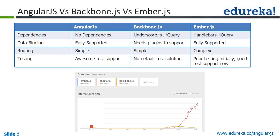The next one is testing. Whenever a developer builds an application, they should be able to write unit test cases. In AngularJS, we have awesome test support — using Protractor with Selenium, we can write end-to-end automated testing.